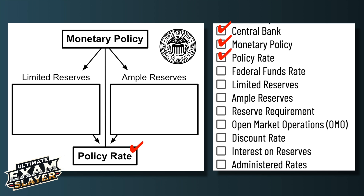The policy rate is the benchmark or the target they're shooting for — to say we're doing a good job increasing or decreasing interest rates. In the United States, the policy rate is the federal funds rate. It's the rate that commercial banks charge each other for overnight loans.